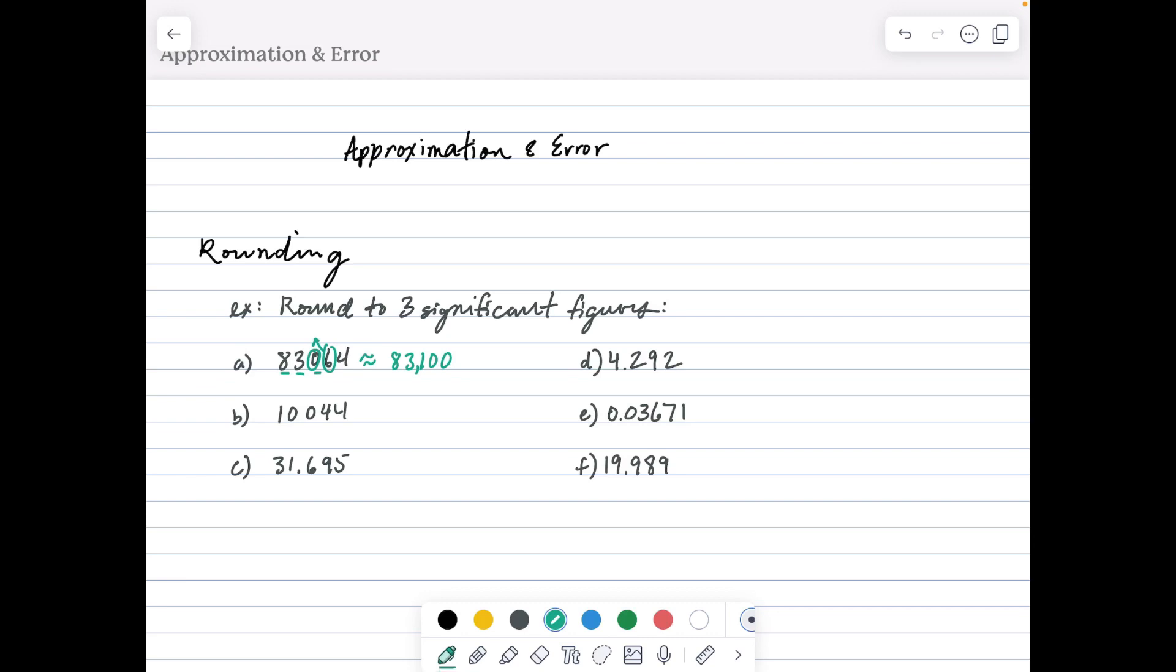Example B: three significant figures starting with the most valuable digit. We're looking at this zero and deciding whether to keep it or increase it by one. The 4, since it's below 5, tells us to keep it where it is, so we approximate 10,044 to just 10,000.